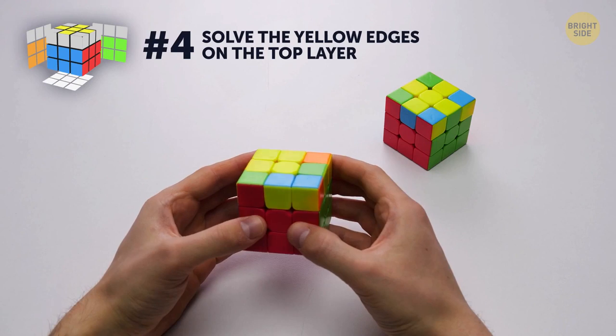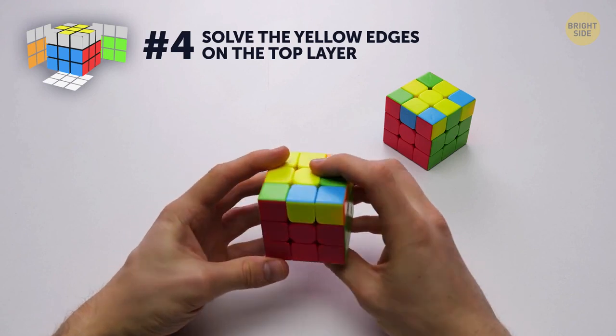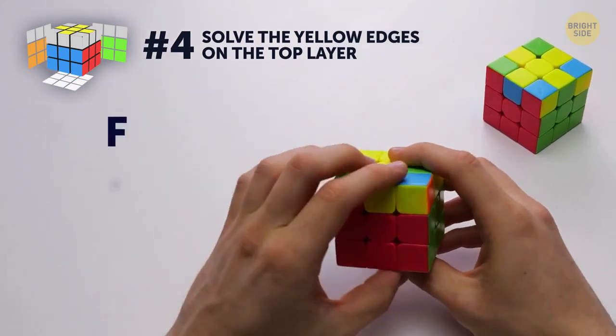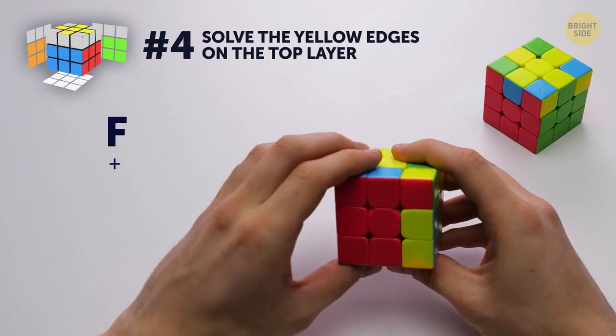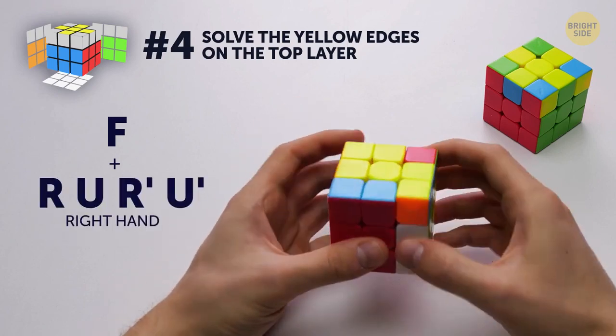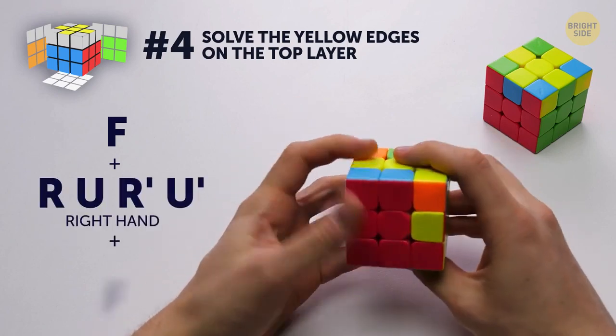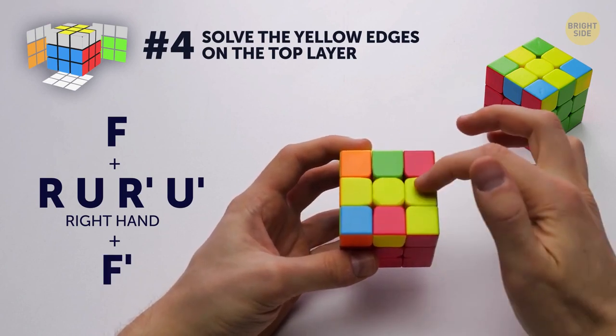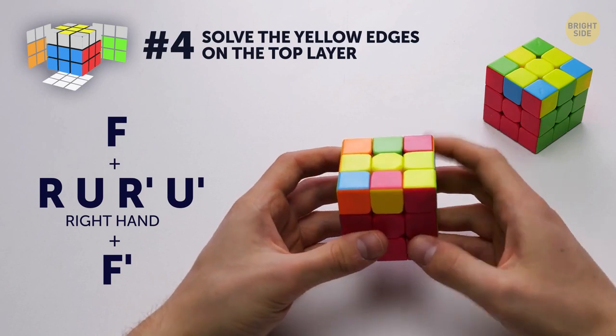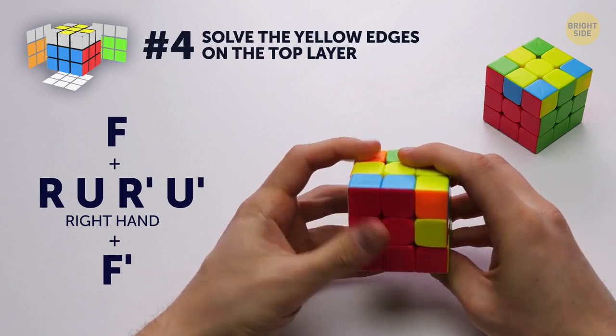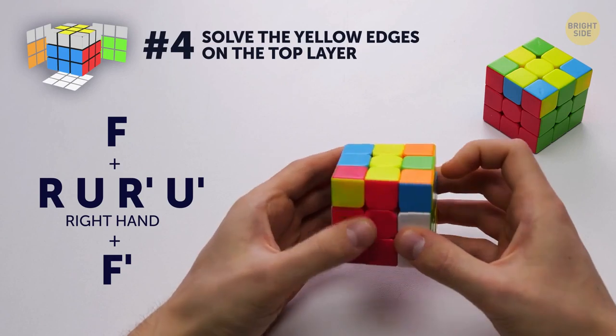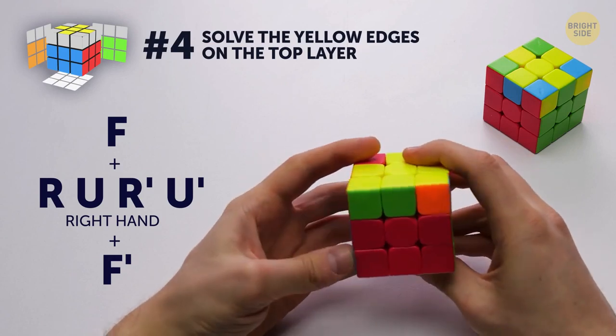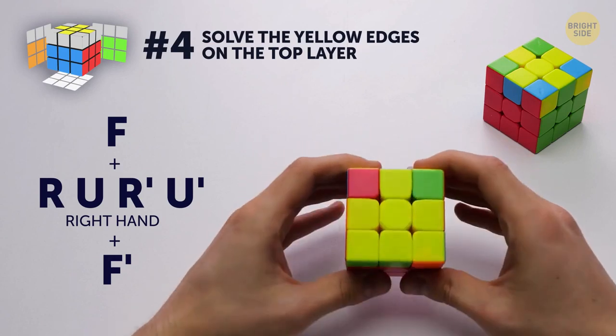If you don't see the yellow line but only a random set of yellow edges, start doing the algorithm. As soon as you see the yellow line, start doing the same algorithm. And this is how you get a cross!